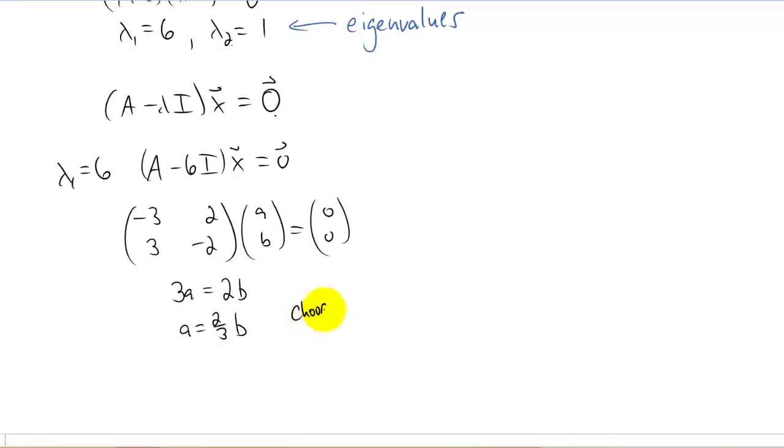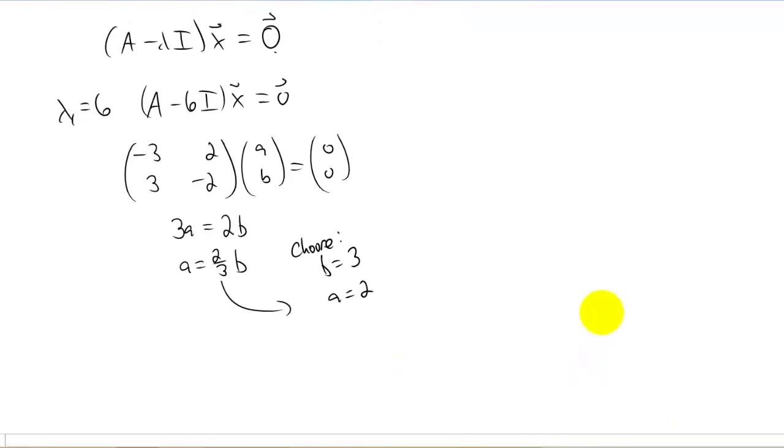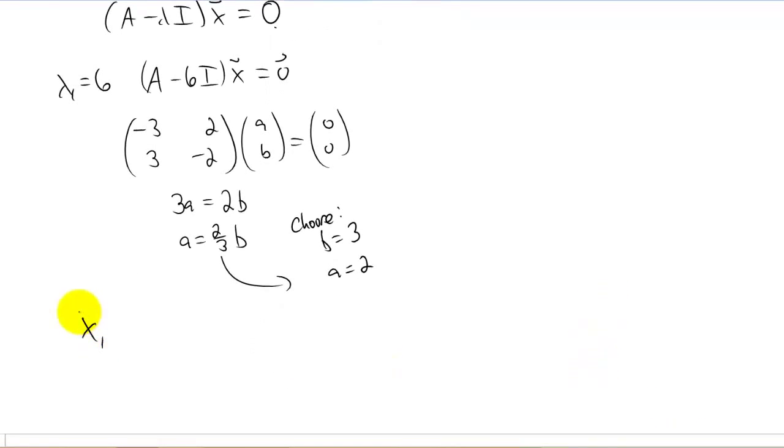We get three a equals two b in either case, or I guess you can just say a equals two thirds b. And we can choose a convenient value for b. I'm going to choose b equals three to avoid fractions. And using that equation, you end up getting a equals two. So our x value, we'll call it x one to correspond with our lambda one. Our vector is just going to be two, three.